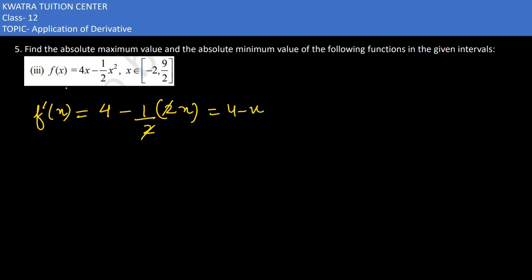So you get 4 minus x. And 4 minus x ko equal to 0 rakhoge, f'(x) ko kiske equal rakhoge? 0 ke. So you would get 4 minus x is equal to 0. Minus x is equal to minus 4. So you would get x as 4. X ki value kya hai? 4.